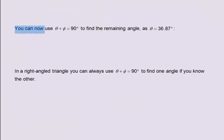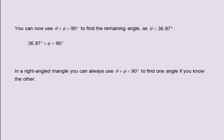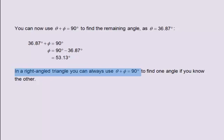You can now use theta plus phi equals 90 degrees to find the remaining angle. As theta equals 36.87 degrees, 36.87 degrees plus phi equals 90 degrees. Phi equals 90 degrees minus 36.87 degrees, which equals 53.13 degrees. In a right-angled triangle, you can always use theta plus phi equals 90 degrees to find one angle if you know the other.